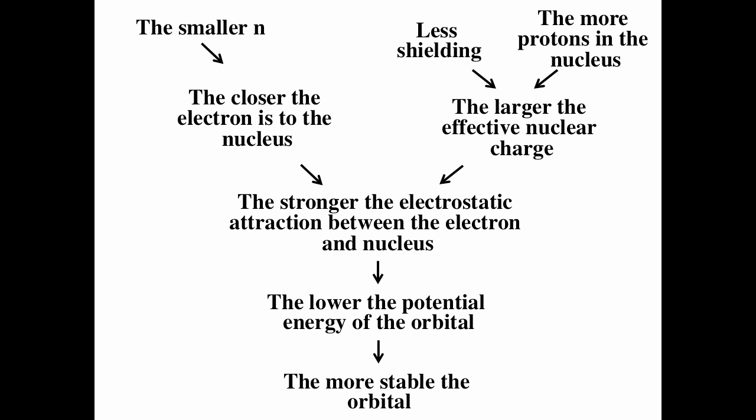An orbital is characterized by three quantum numbers n, l, and m sub l. n is the principal quantum number — it denotes the shell and indicates the size. The smaller the n, the smaller the size, the closer the electron is to the nucleus, and the stronger the electrostatic attraction. The larger the effective nuclear charge, the stronger the attraction. The effective nuclear charge depends on the number of protons in the nucleus and also on shielding. Less shielding means larger effective nuclear charge, stronger attraction, and lower energy of the orbital — the more stable the orbital.